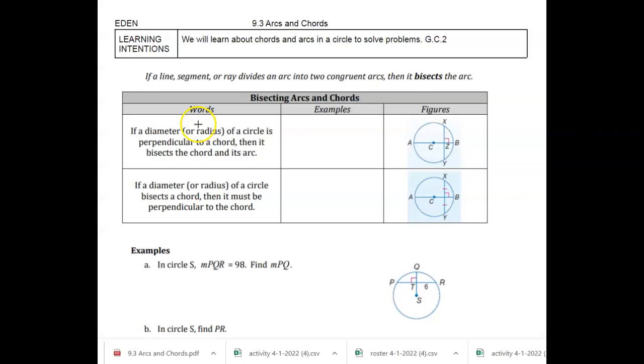So the first part says, if a line, segment, or ray divides an arc into two congruent arcs, then it bisects the arc. Remember, we saw this with angles, but bisect means two, and to cut means two sect. And so they're going to be two congruent arcs. And there's still that relationship between the arcs.